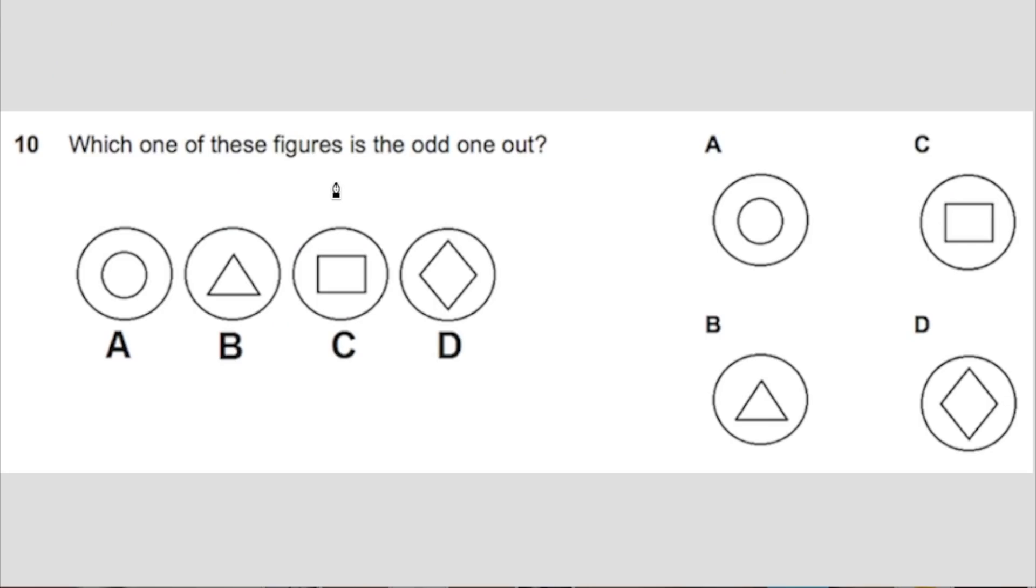Instantly, when someone looks at this, they think, which is the odd one out? Well, B, C, and D have corners, right? And so they automatically say A is the odd one out. But it's actually not. Why is that?